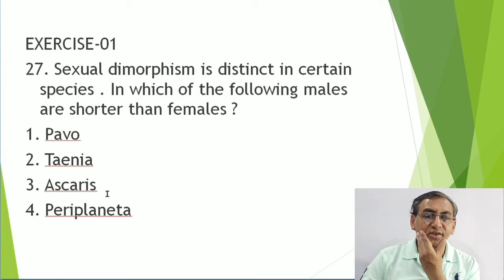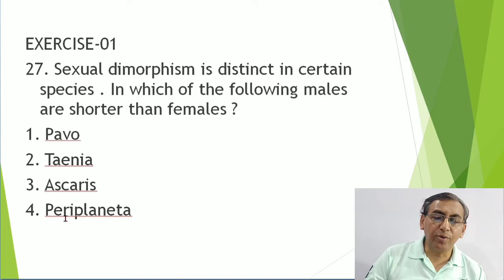In Periplaneta (cockroach), sexual dimorphism is also present, but it is not on the basis of size - it is on the basis of the anal style. The male cockroach has a caudal style. The question asks which of the following appears circular in cross section - that is Aschelminthes, the roundworms.